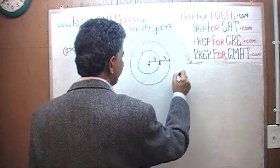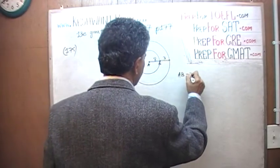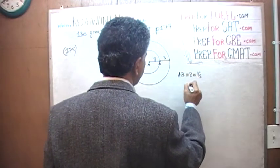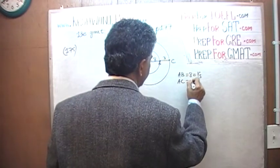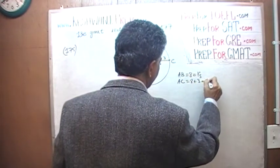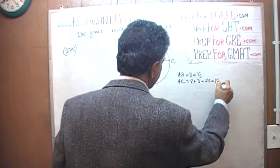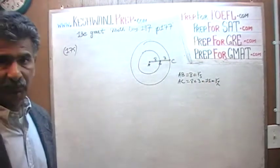A to B is 8, which is the radius of the small circle. A to C would be 8 plus 3, which is 11, which is the radius of the large circle. And the question simply is, what is the area of the ring?